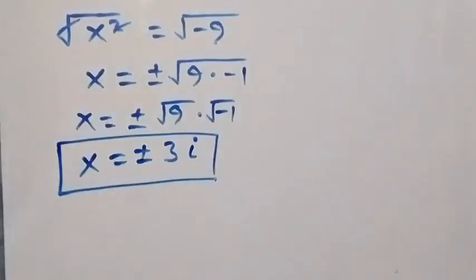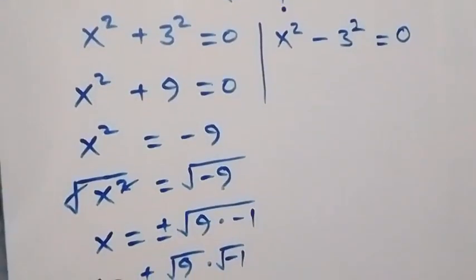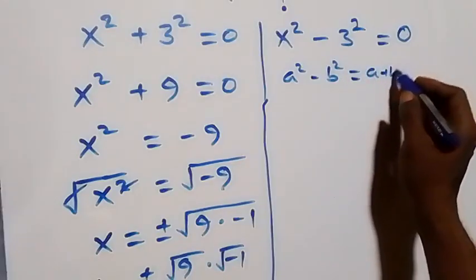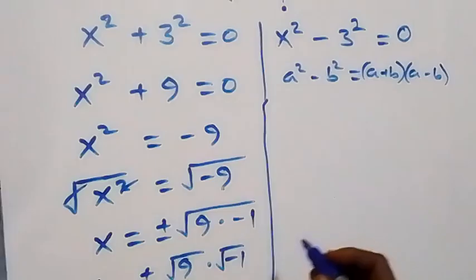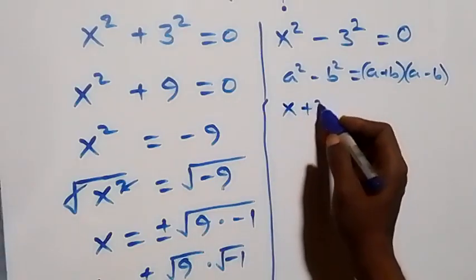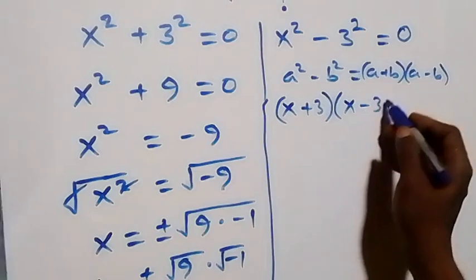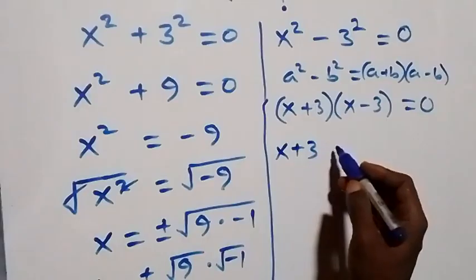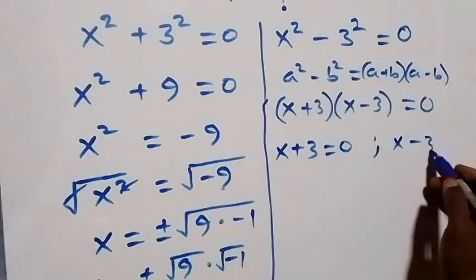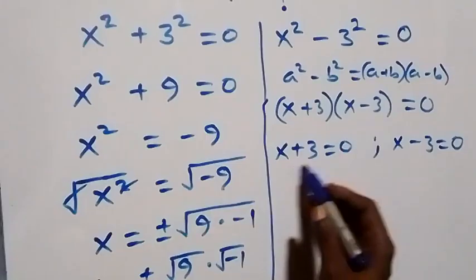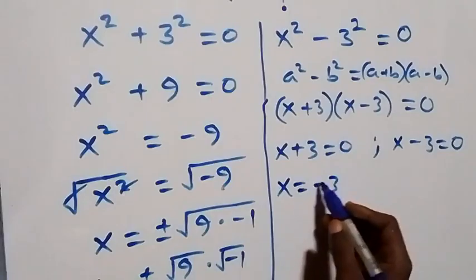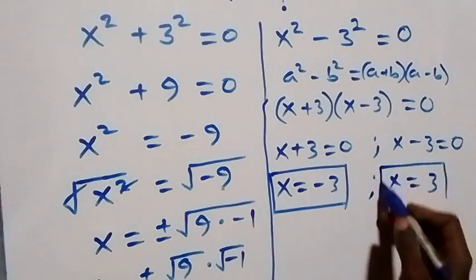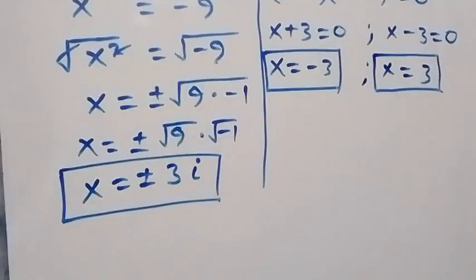So here we have two complex solutions. On the other side, from a squared minus b squared equals a plus b times a minus b, what we have becomes: open bracket x plus three, close bracket, times open bracket x minus three, close bracket, equals zero. The two cases are x plus three equals zero, giving x equals minus three, a real solution; and x minus three equals zero, giving x equals three, also a real solution. So altogether we have four solutions.